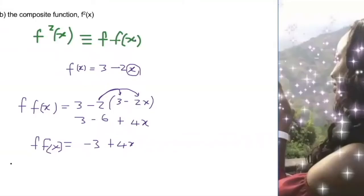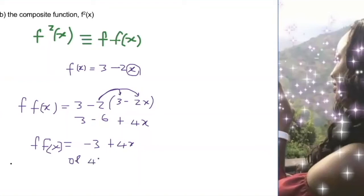To summarize what we did: we replaced x with the function 3 minus 2x, then multiplied: minus 2 times 3 is negative 6, and minus 2 times negative 2x is positive 4x. Then 3 minus 6 gives negative 3 plus 4x. Another way to rewrite this is as 4x minus 3.